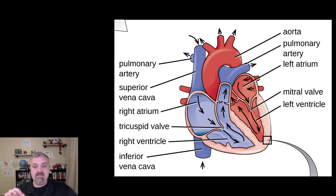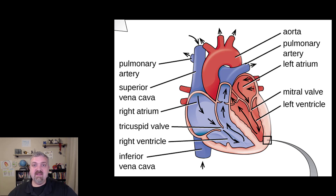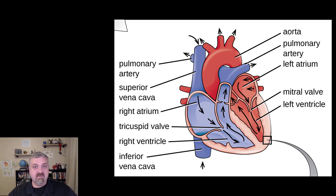So to recap: right atrium through the right AV valve — the tricuspid valve — to the right ventricle. Right ventricle through the pulmonary semilunar valve to the pulmonary trunk, then to the pulmonary arteries, to the lungs, and back through the pulmonary veins. Left atrium, then through the left AV valve — the mitral valve or bicuspid valve — to the left ventricle. The left ventricle sends blood through the aortic semilunar valve to the aorta, and it goes again and again. Very important you know that — watch this video multiple times.